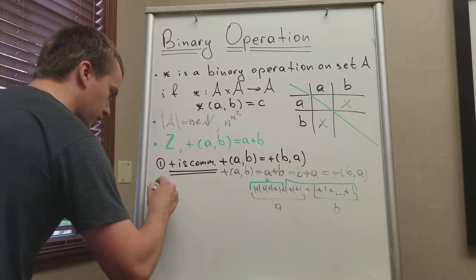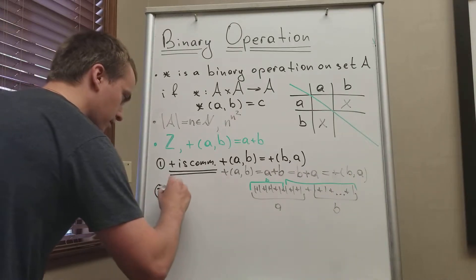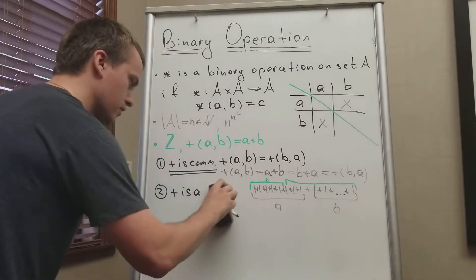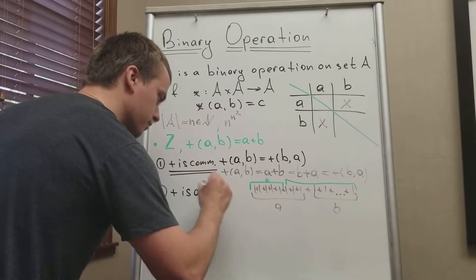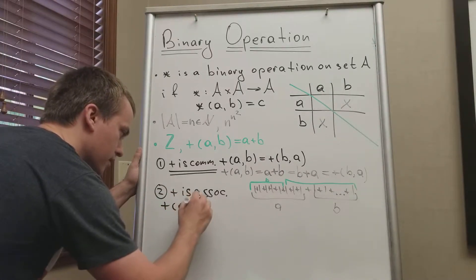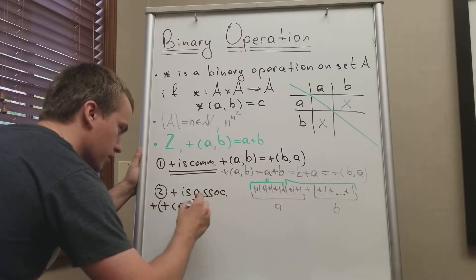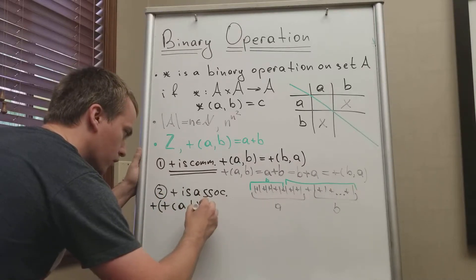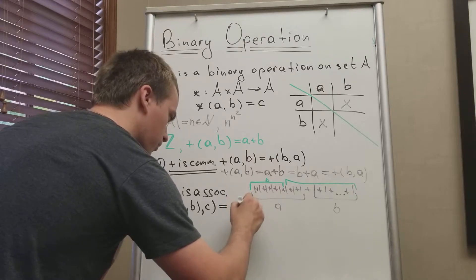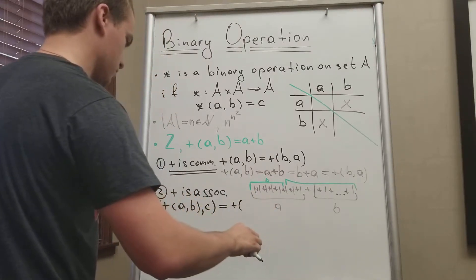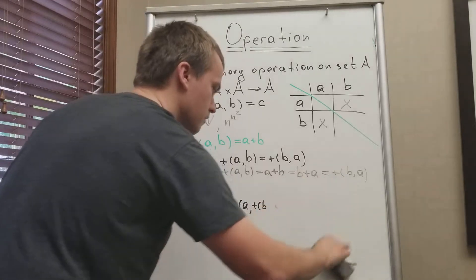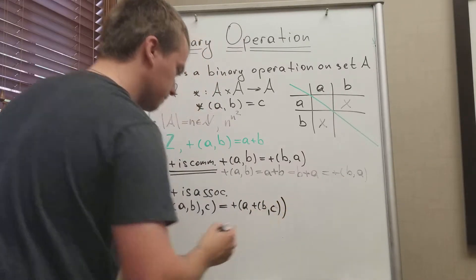Next, the binary operation plus is associative. Associativity means the operation of (A*B) and C is the same as the operation of A and (B*C). So it doesn't matter how you group the elements.